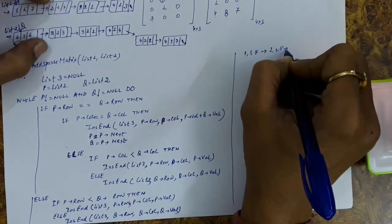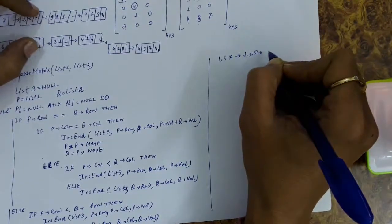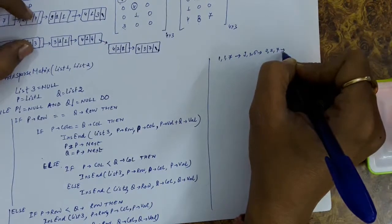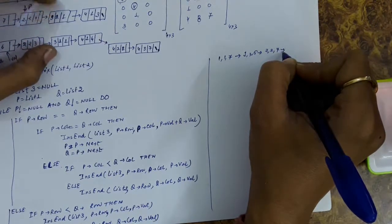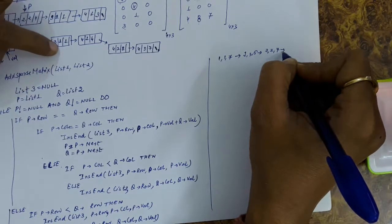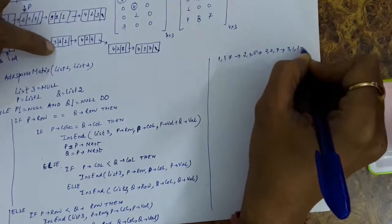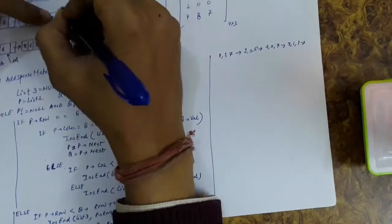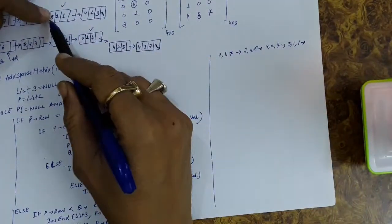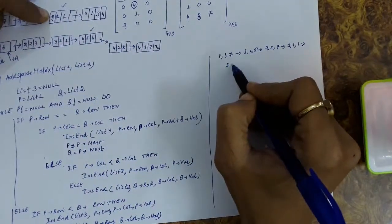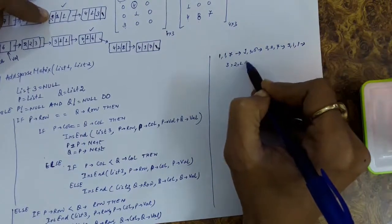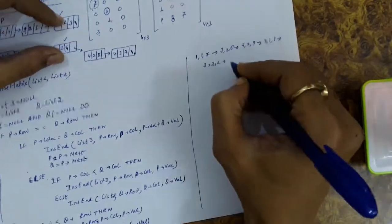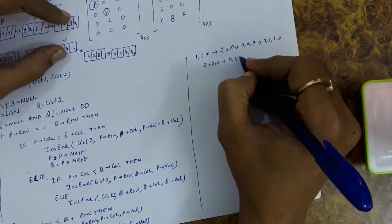We advance to the next nodes. Row numbers are equal and column numbers are also equal, so the values are added: position 2,2 with value 3 plus 4 equals 7. Then we advance: row numbers equal, column numbers not equal — the first list's column number is smaller, so element 3,1,1 is added. We advance and compare: row number of Q is smaller, so element 3,2,1 is added. Then row number and column number both equal — elements are added: position 4,1 with value 3 plus 4 equals 7.